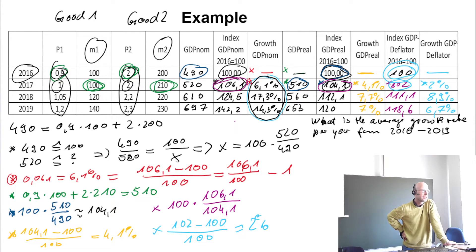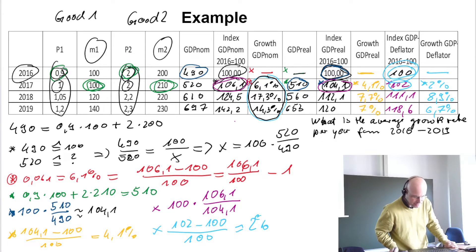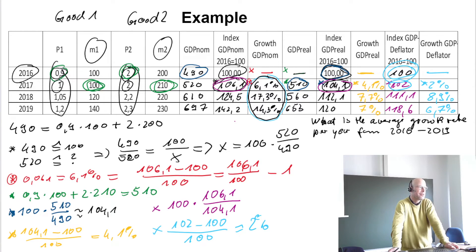I hope you have done this in your statistics or mathematics courses. We have growth rates of 4.1%, 7.7%, and 14.3%. What should you do, knowing that these are growth rates, to calculate a reasonable average growth rate?